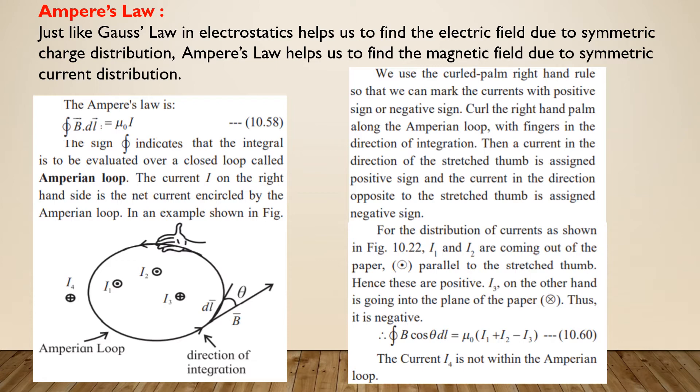If theta is the angle between B bar and DL bar, then the mathematical expression for Ampere's law is closed integral B DL cos theta is equal to mu0 times I1 plus I2 minus I3.